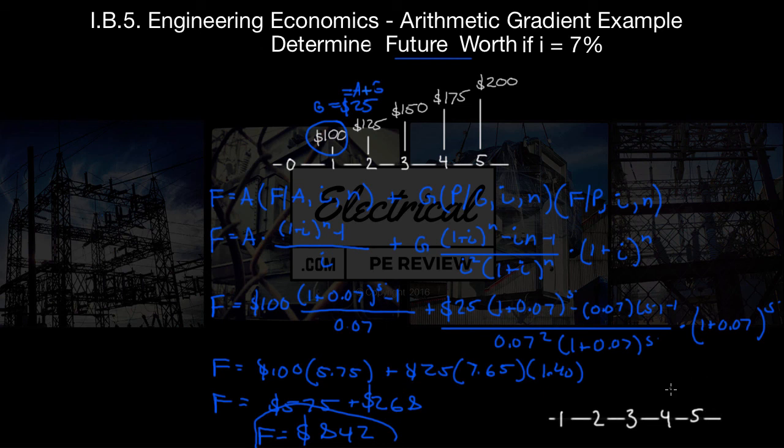And of course, if we're going to draw a new equivalent cash flow diagram just representing this future worth, we would have something that looks like this. We've got nothing happening until a period of n equals 5 would be a benefit of $842.